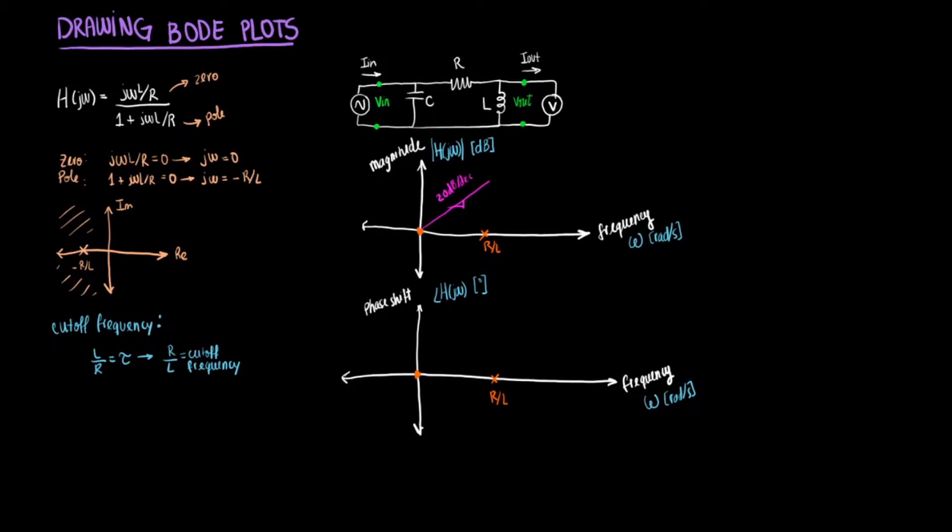But then you're going to hit this pole. The pole will actually make you decrease your slope by 20 decibels per decade. So if you were at 20 and you're decreasing by 20, you go back to zero. So now you're going to have this happening because the pole hit.